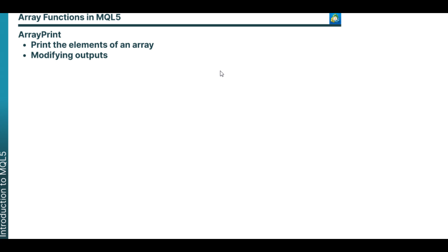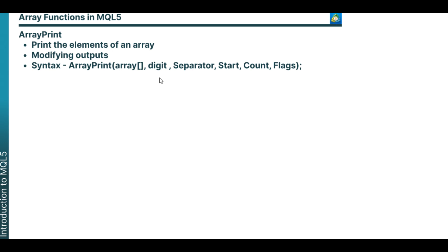What makes ArrayPrint different from other print functions is that it can be used to modify the output. Here is the syntax for ArrayPrint, which includes the array name, which is the identifier, also the digits, the separator, the start, the count, and flags.